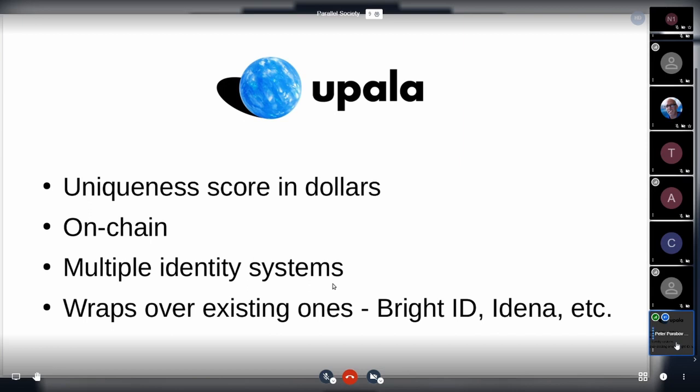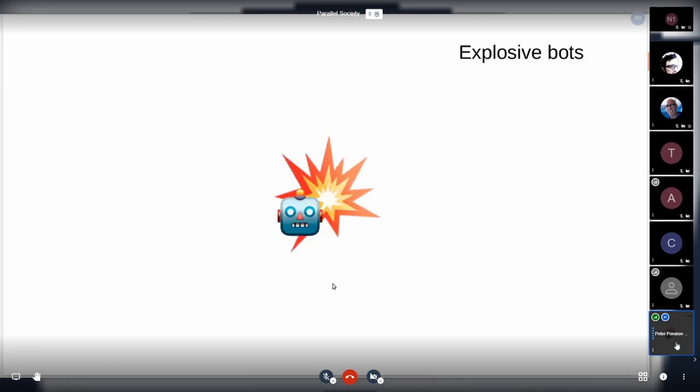Upala is totally on-chain - the score is stored and proved on-chain. There could be multiple identity systems built on top of Upala because it's a protocol, and Upala can wrap over existing identity systems like BrightID, IDENA, and other ones out there.